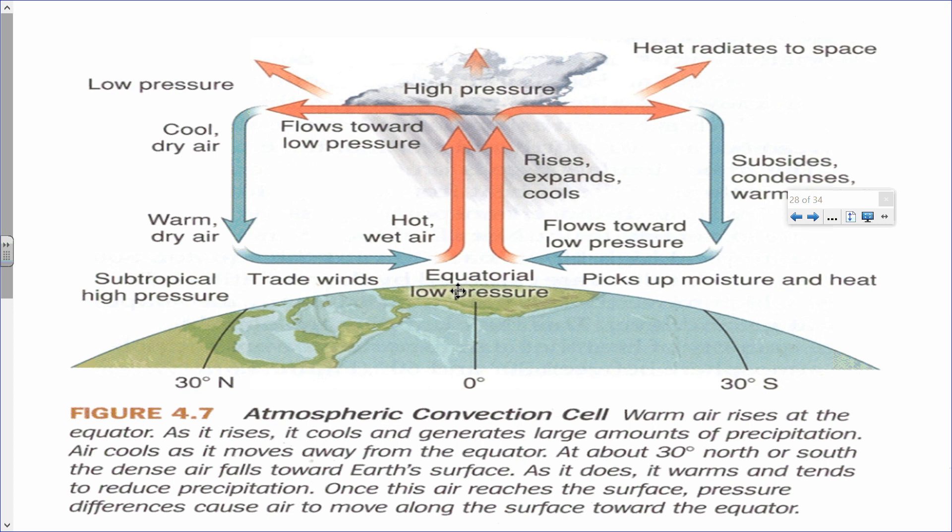Typically, as you can see in this image and as it says in the caption, warm air rises at the equator. As it rises it cools, eventually it will condense and form clouds, and if you have enough moisture it's going to precipitate.